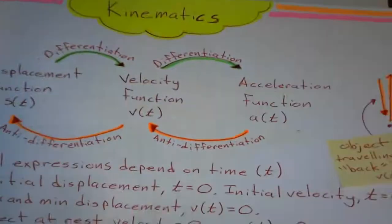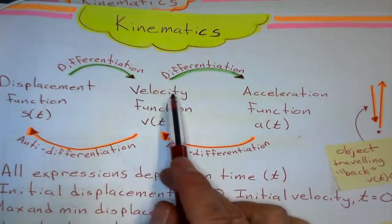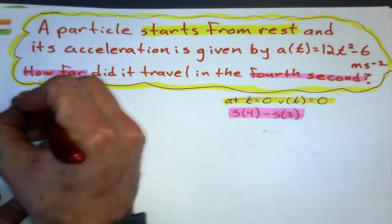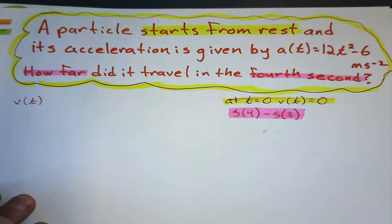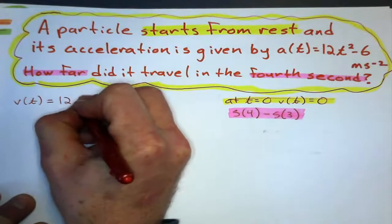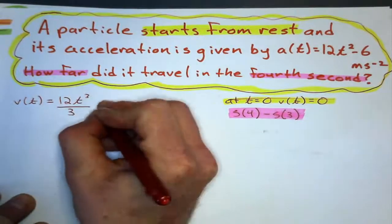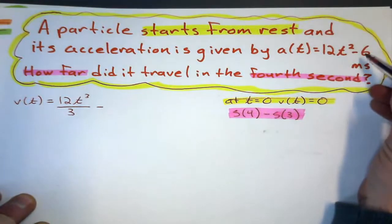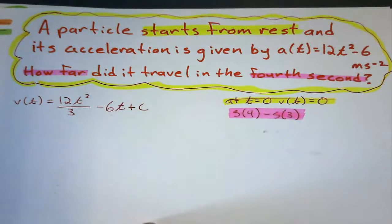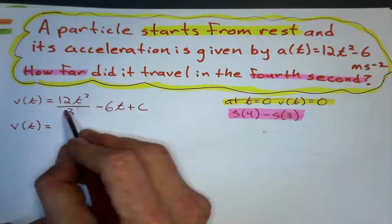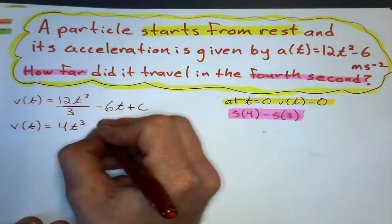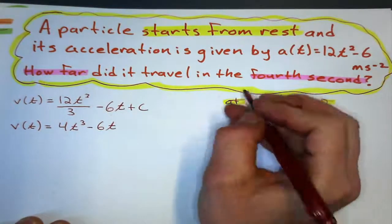Moving on — if we're given the acceleration, the first thing we have to do is anti-differentiate to get the velocity first. We add one to the exponent and divide by that new exponent. Negative six anti-differentiates to negative six t, and of course plus our constant. Simplifying: twelve t cubed over three gives four t cubed.